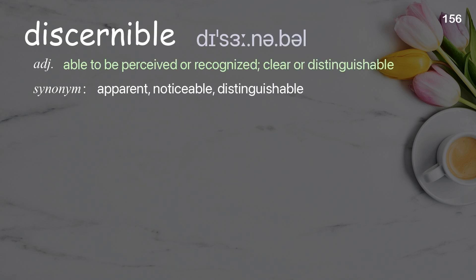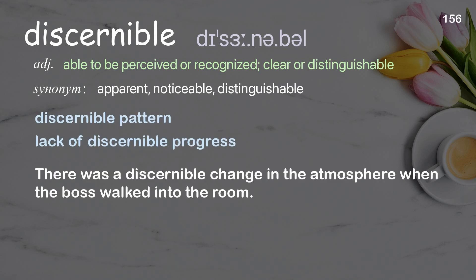Discernible: able to be perceived or recognized; clear or distinguishable. Examples: discernible pattern, lack of discernible progress. There was a discernible change in the atmosphere when the boss walked into the room.